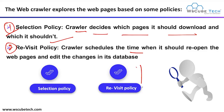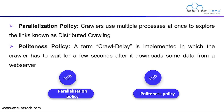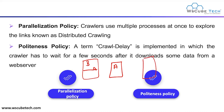For example, if this is your website and the web crawler visits and reads every single piece of information, then after some days if you make any changes to your webpage, the Google crawler will visit your website again and crawl all the updated changes you've made, storing them in the database. Next we have the parallelization policy.